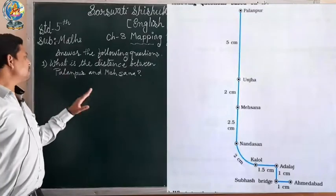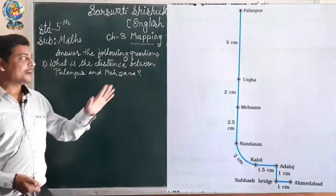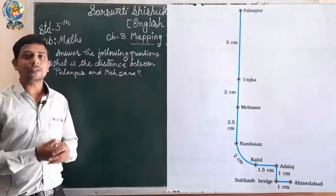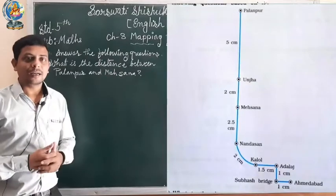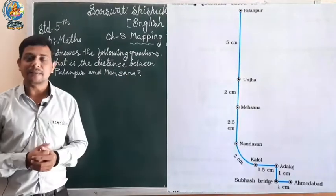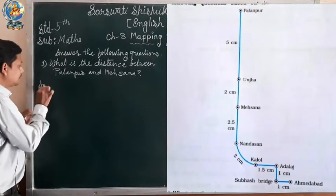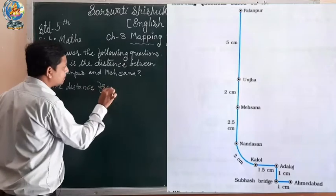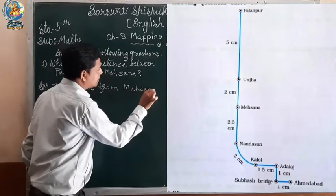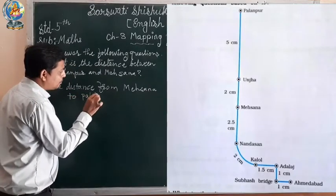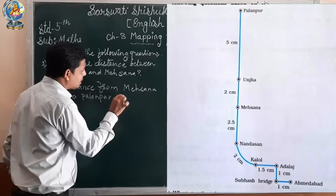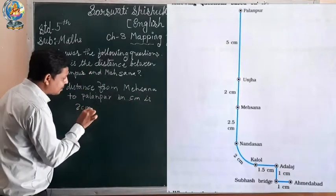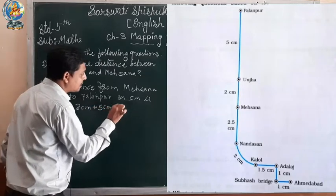Question number 1: What is the distance between Palanpur and Mahsana? We have to see the map and find out the total distance from Mahsana to Palanpur. From Palanpur to Unja is 5 centimeter, and from Unja to Mahsana is 2 centimeter. So the total distance from Mahsana to Palanpur is 2 centimeter plus 5 centimeter, that is 7 centimeter.